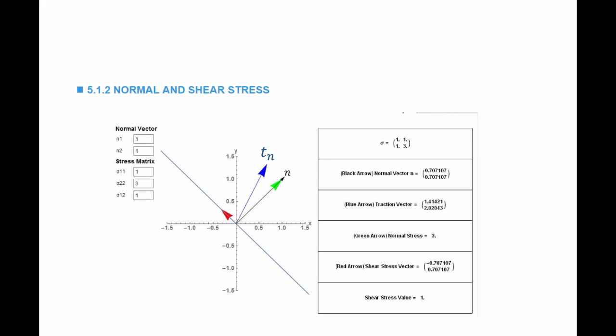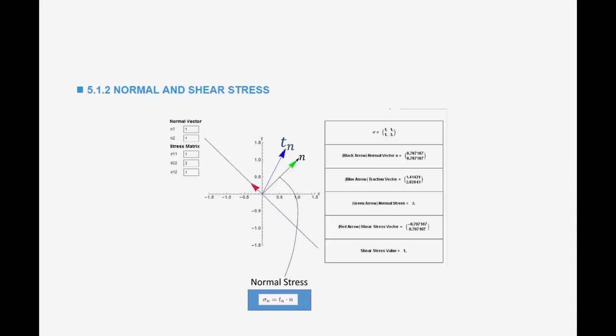On the website, there is a tool where you can enter the values of the stress matrix and a normal vector N. The tool normalizes the vector and calculates the traction vector acting on that surface with normal N, and you can verify the result by hand. The normal stress is the component of TN in the direction of N — the projection of the traction vector onto the surface normal — and is equal to the dot product between TN and N.